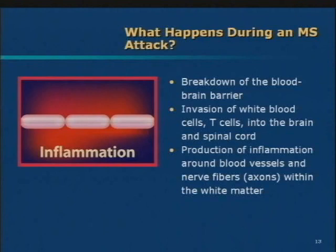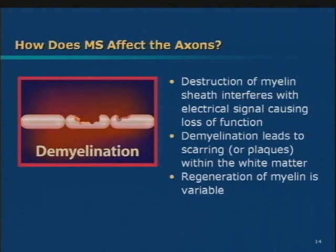In MS, this is part of the degenerative process in which axons are being injured. With breakdown of the blood-brain barrier, you get invasion of white blood cells into the brain and spinal cord. They create an inflammatory reaction around the nerves and axons, and it begins to damage the fibers. The myelin insulation gets chewed up, which starts to interfere with signals getting up and down, and so symptoms may develop at this stage.